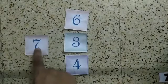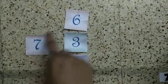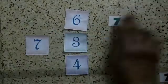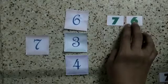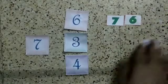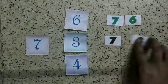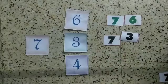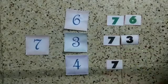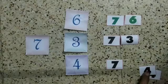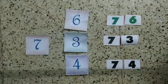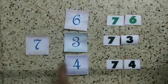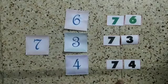7 and 6 is 76. Another 7 and 3, 73. Next 7 and 4, 74. So these are the two digit numbers we can make. Now again I am going to repeat this number like this.